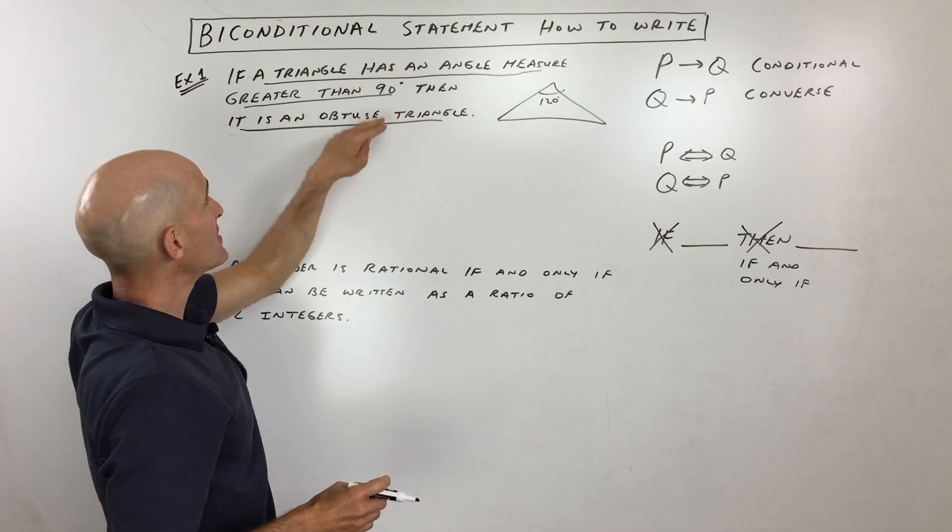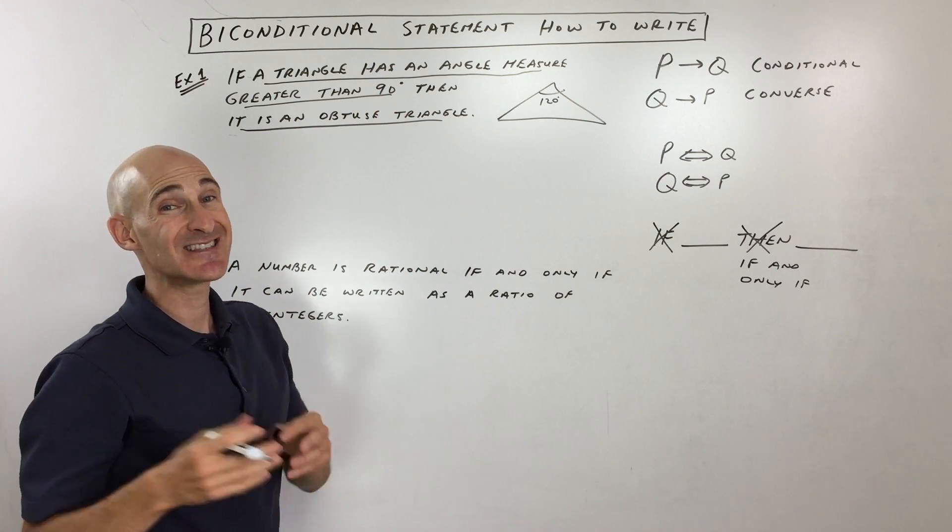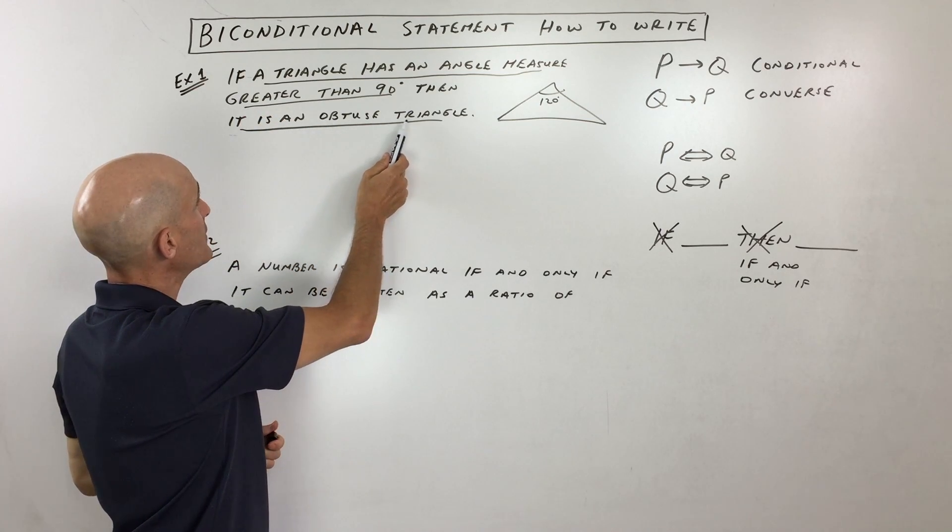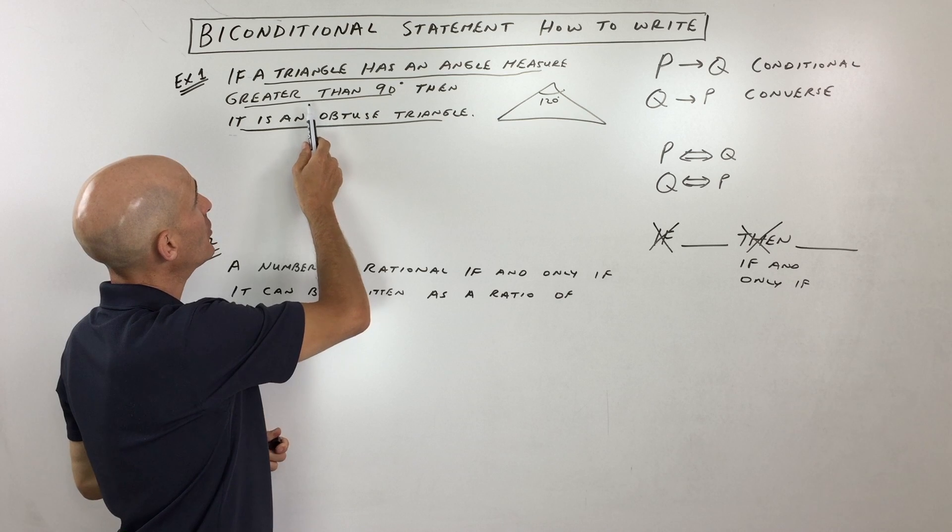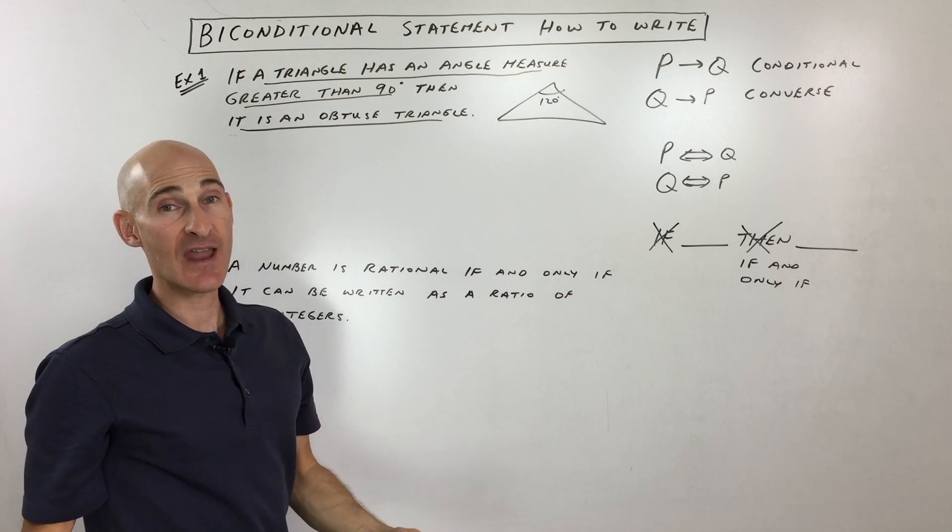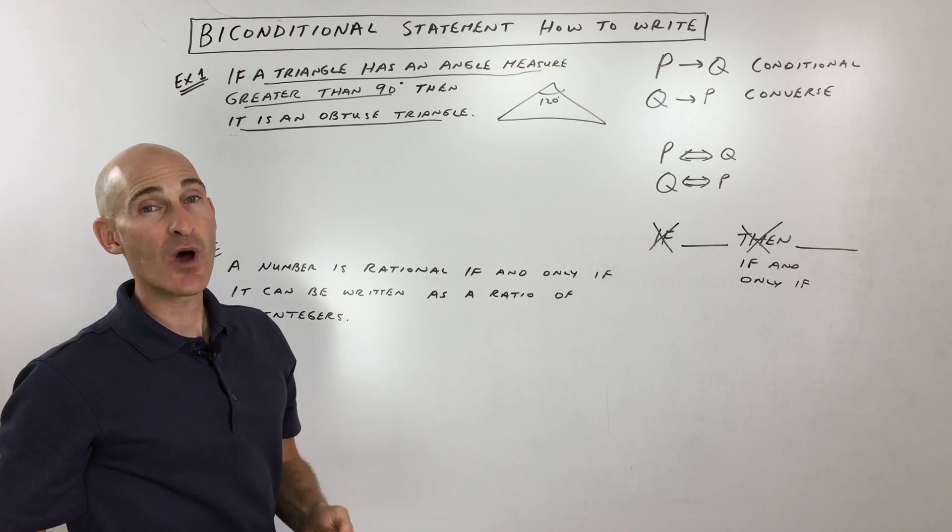But now what we're going to do is we're going to switch the hypothesis and the conclusion and see if that's also true. So, let's say it in reverse. If a triangle is an obtuse triangle, then the triangle has an angle measure greater than 90 degrees. Is that true? Yes, that is true as well.